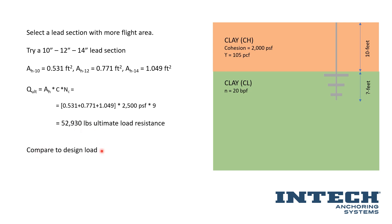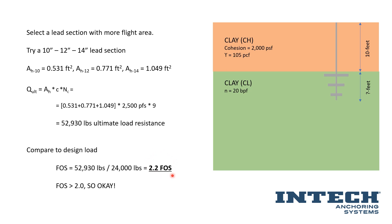Comparing that to our design load, the factor of safety is 52,930 divided by 24,000, which gives a factor of safety of 2.2. Since this is more than 2, this lead section is sufficient to distribute that load into a small enough pressure so that we have enough bearing capacity.